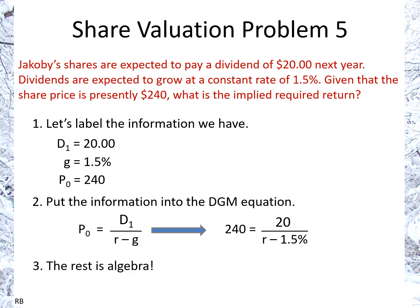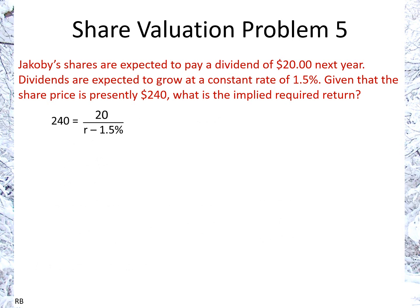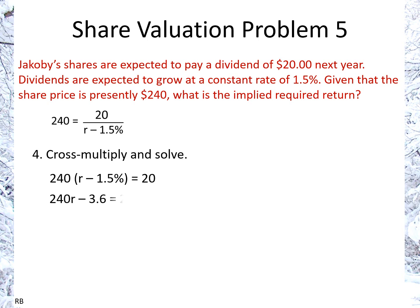And the rest is algebra. Taking the equation, we cross multiply — or multiply both sides by (R minus 1.5%) — that gives us 240 times (R minus 1.5%) equals 20. Multiplying that out: 240R minus 3.6 equals 20. Collecting the terms: 240R equals 23.6. Therefore R is 23.6 over 240, which gives us 0.09833.